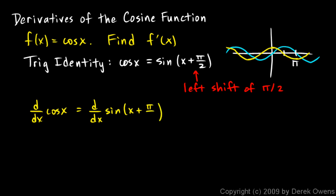That's easy to do because we know how to differentiate the sine function. The derivative of sine is the cosine of that argument, so it's cosine of x plus pi over 2, times the derivative of the inner function by the chain rule. But x plus pi over 2 is a constant shift, so the derivative of the inner function is just 1 — it doesn't even make sense to write times 1.